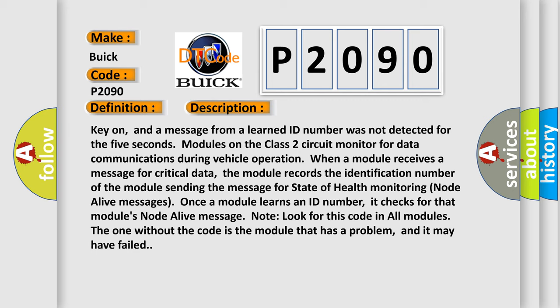Key on, and a message from a learned ID number was not detected for five seconds. Modules on the class 2 circuit monitor for data communications during vehicle operation. When a module receives a message for critical data, the module records the identification number of the module sending the message for state of health monitoring node alive messages. Once a module learns an ID number, it checks for that module's node alive message. Look for this code in all modules. The one without the code is the module that has a problem, and it may have failed.